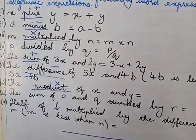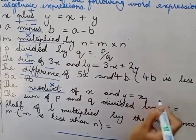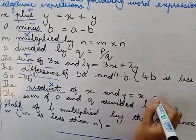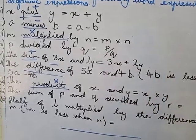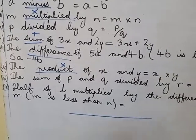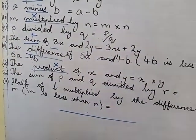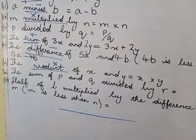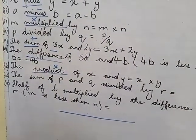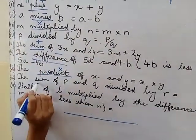So x multiply by y. Part 8 is the sum of P and Q divided by R. Sum means, I told you, addition.